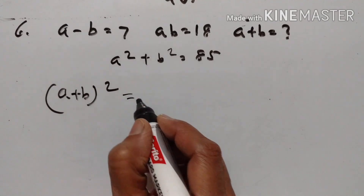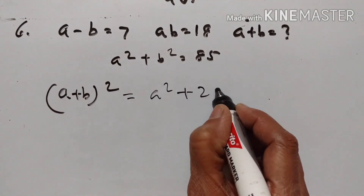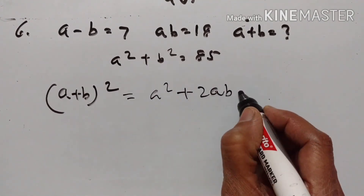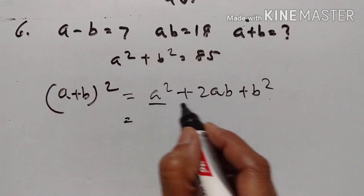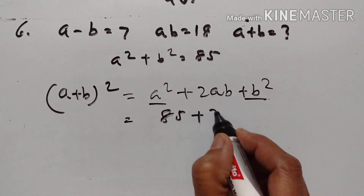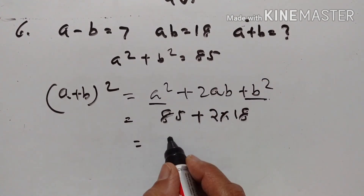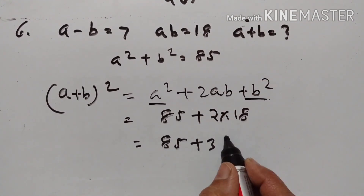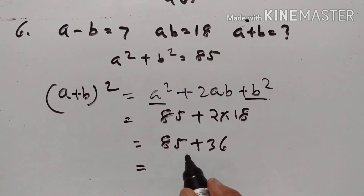Now, (A+B)² = A² + 2AB + B². A² + B² = 85 and AB = 18, so 2AB = 36. Therefore (A+B)² = 85 + 36.